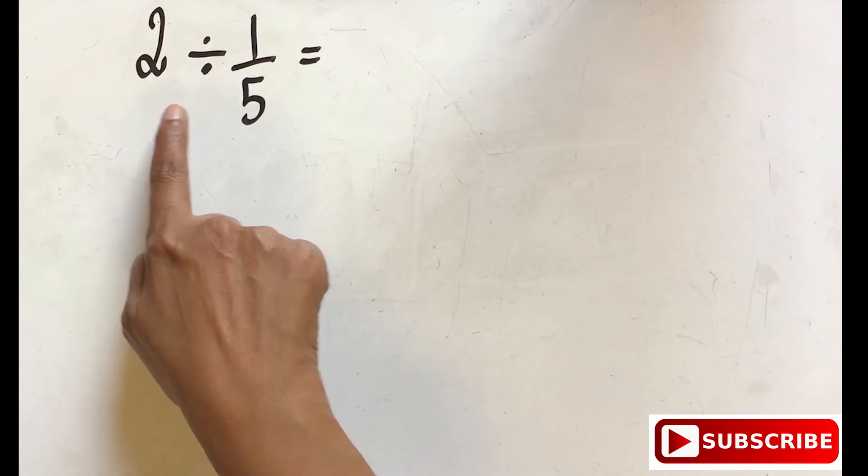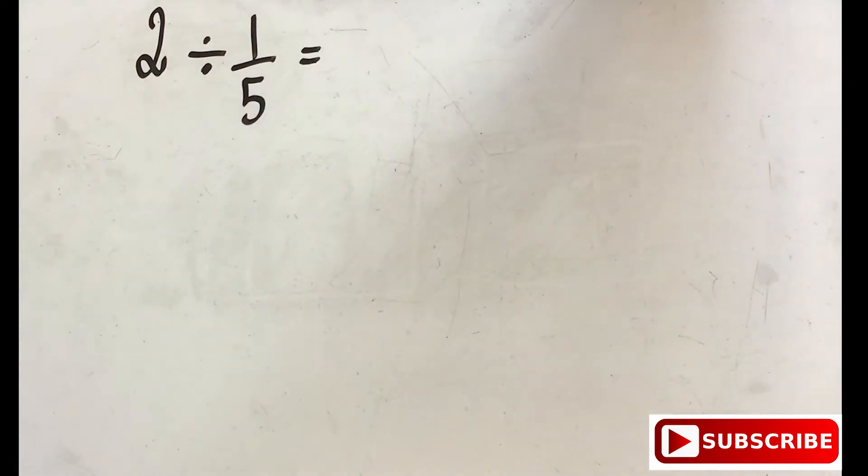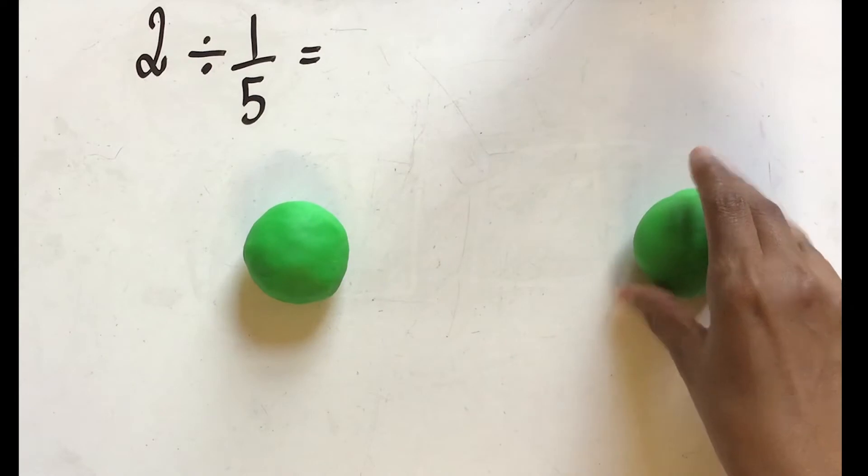Let's look at this question. We need to divide two into one-fifth, assuming that we have two balls of Play-Doh.